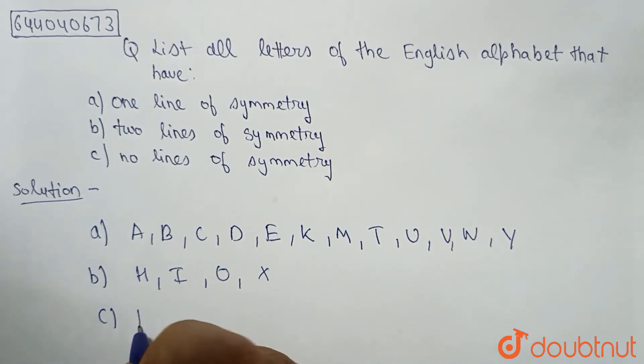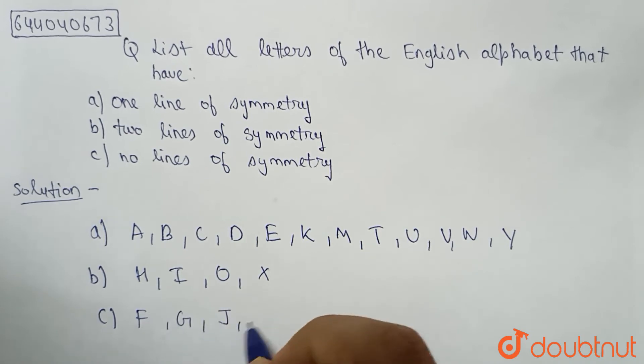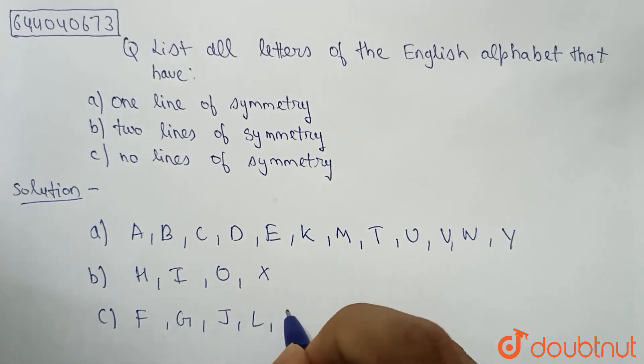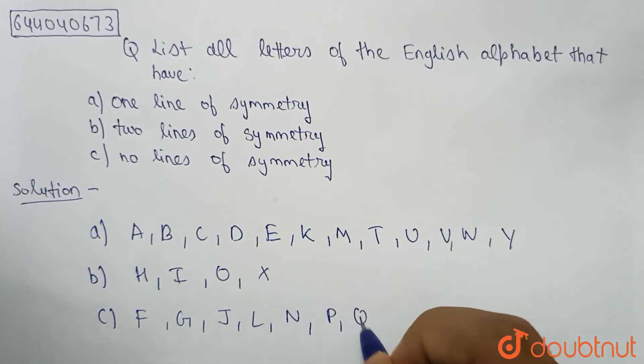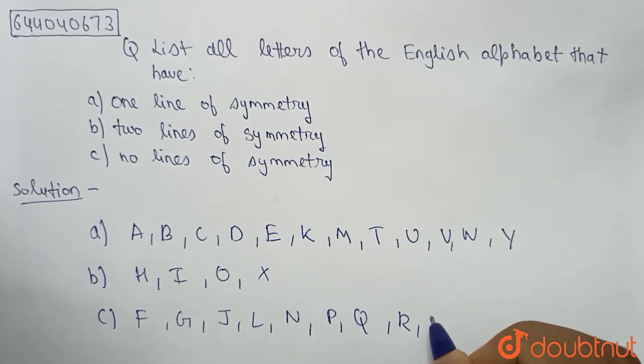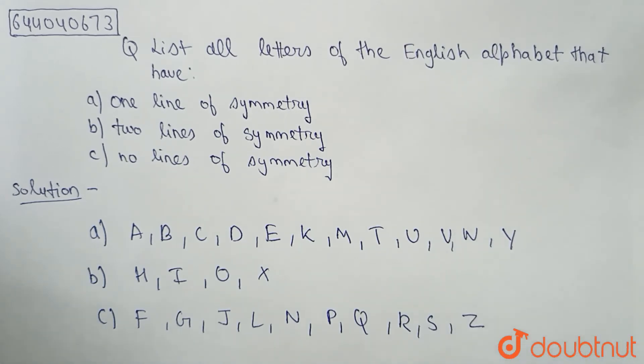The letters of English alphabet which have no lines of symmetry are F, G, J, L, N, P, Q, R, S, and Z. So this is our answer, thank you.